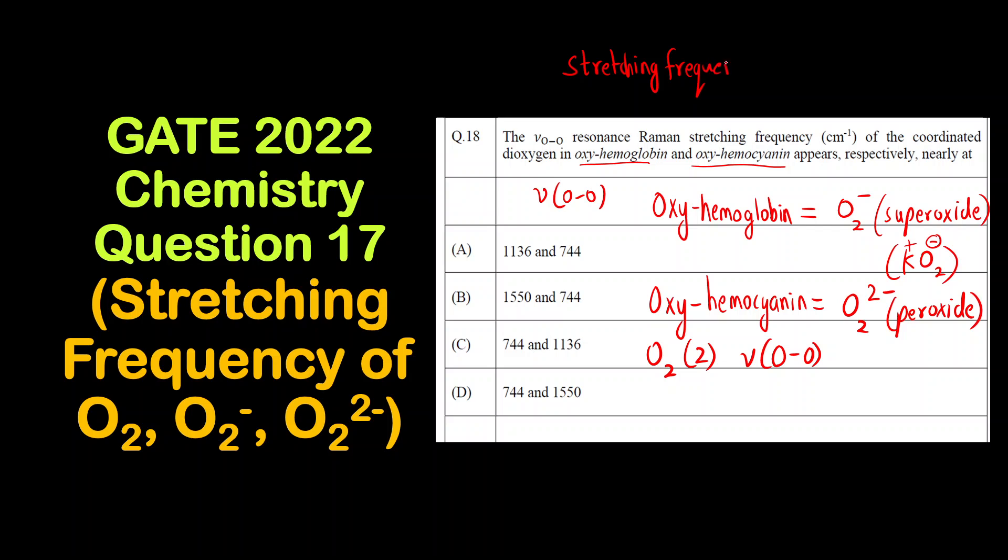If you see the formula: ν = (1/2πc)√(k/μ). What is ν? ν is the stretching frequency. C is speed of light. K is the force constant.